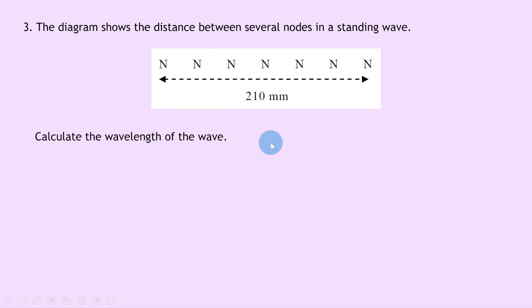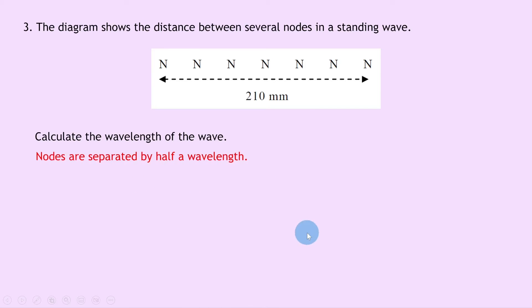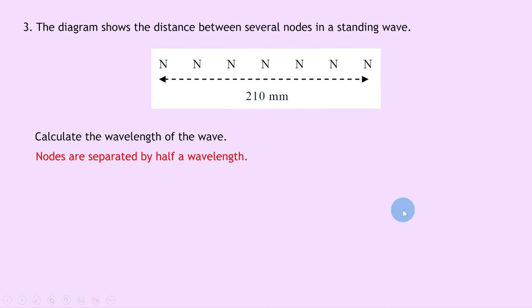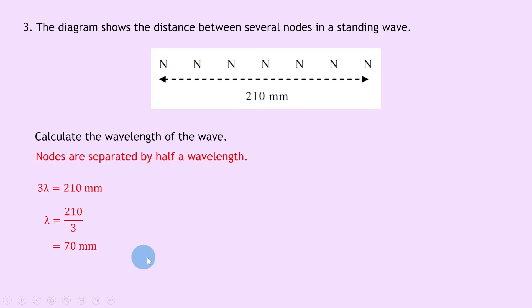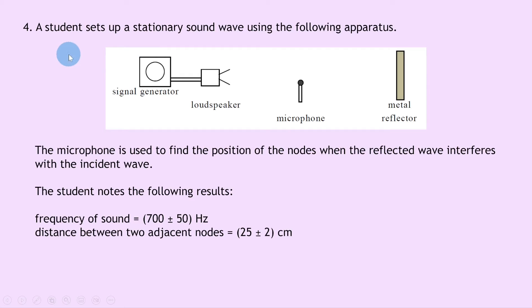Question 3 shows a diagram with the distance between several nodes in a standing wave. The points labeled N are the node positions, and the distance between the outermost nodes shown is 210 millimeters. Since nodes are separated by half a wavelength, counting the half-wavelengths between them gives three full wavelengths. So 3λ equals 210 millimeters, meaning lambda equals 210 divided by 3, which is 70 millimeters.